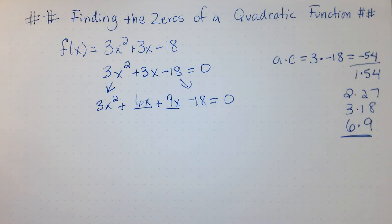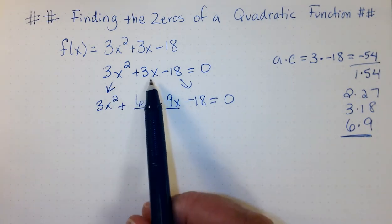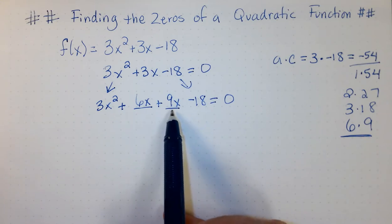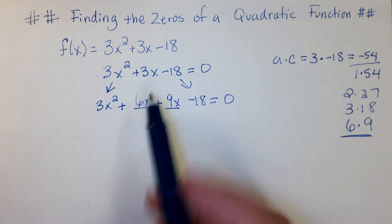We still have to take into consideration the signs, though. So, what do the signs need to be in order to get a positive 3x but still have a negative 54? So, I have a positive 3x. My bigger number is 9. That number also needs to be positive, which then means my 6 here would be negative.